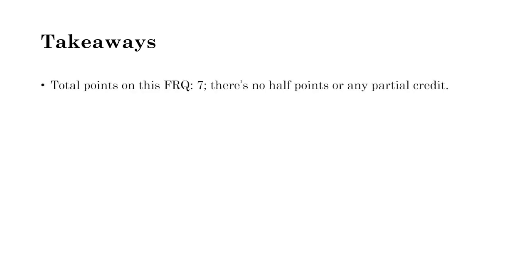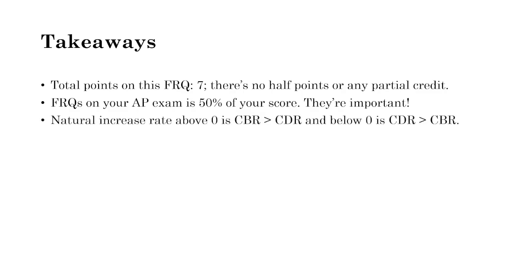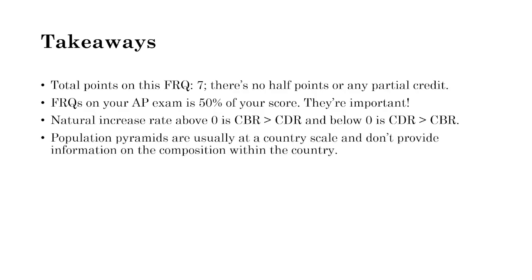Some takeaways: there are seven points on every AP exam FRQ — one point per part, no partial credit, no half points, no extra credit. FRQs are 50% of your score, so they're important. For content: the natural increase rate above zero means the crude birth rate exceeds the crude death rate — population growth. Below zero means the crude death rate exceeds the crude birth rate — population decline. Population pyramids are at a national scale, which limits the data — we can't examine particular regions, states, or provinces within a country.